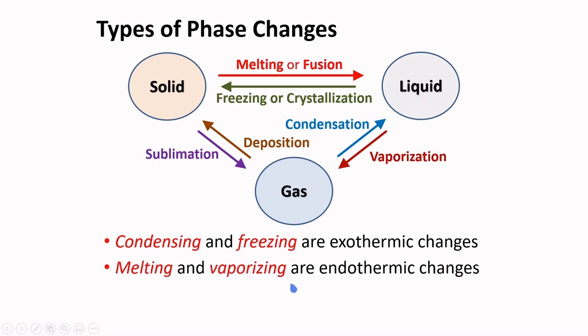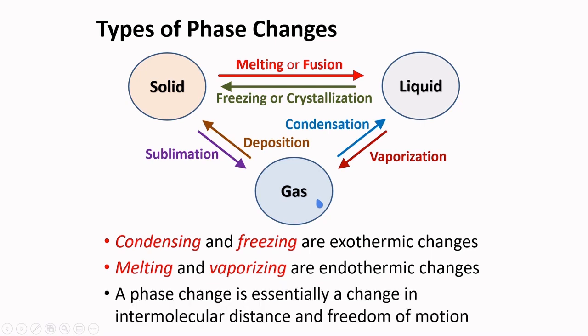The reverse of these processes, melting and vaporizing, are endothermic changes. You need to infuse a certain amount of heat in order for a solid to melt. Heating is required to convert a liquid to gas. Overall, a phase change is essentially a change in intermolecular distance and freedom of motion.